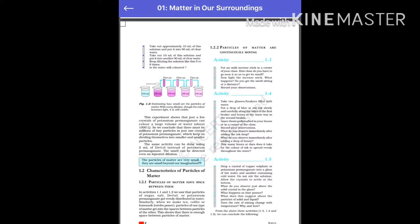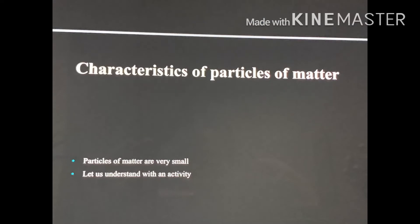Take a 100 ml beaker. Fill half the beaker with water and put a mark on the level of the water. Dissolve some salt or sugar with the help of a glass rod and observe any change in water level. Sugar is made up of extremely small particles; on stirring, they further break into more smaller particles. These extremely small particles go into the spaces between the particles of water, due to which there is no change in the volume of water on dissolving sugar in it. This proves that particles of water, which is matter, have space between them.